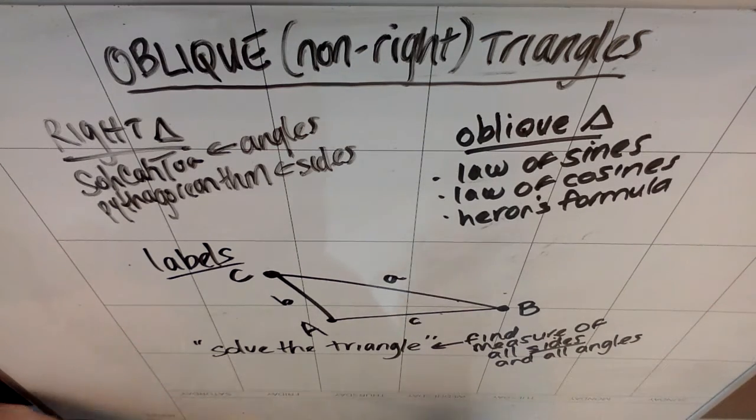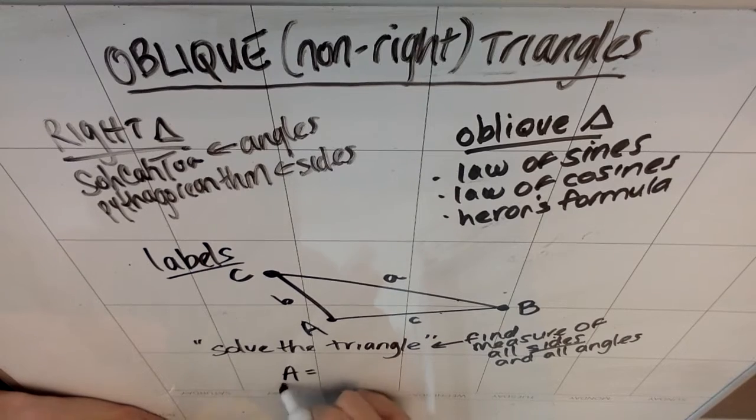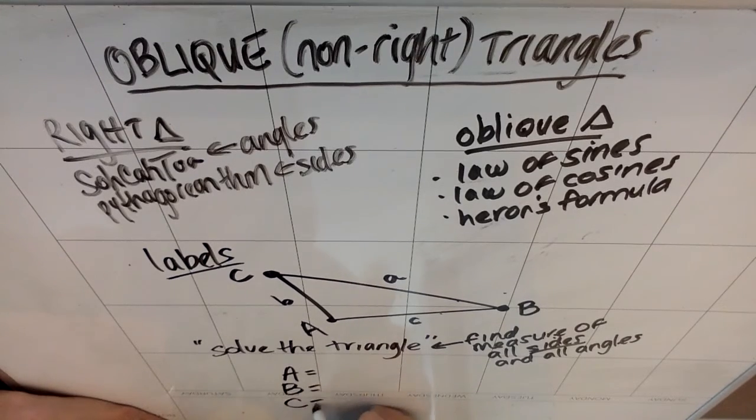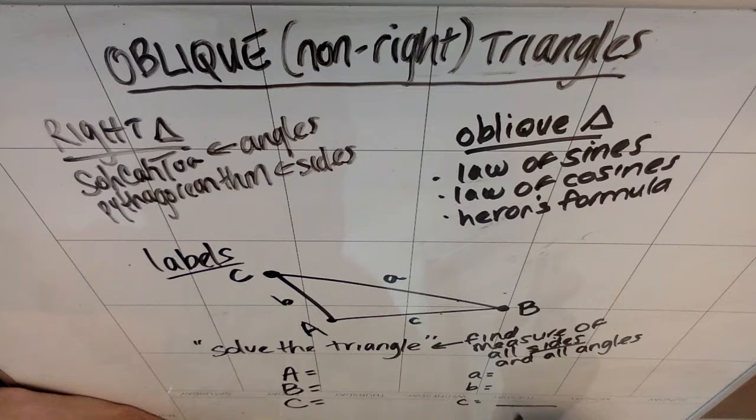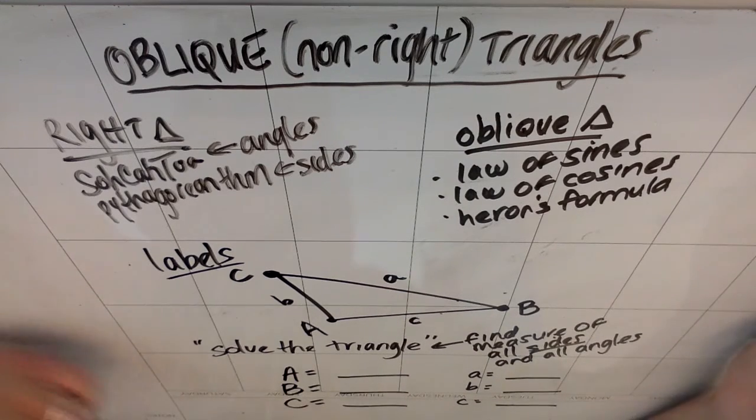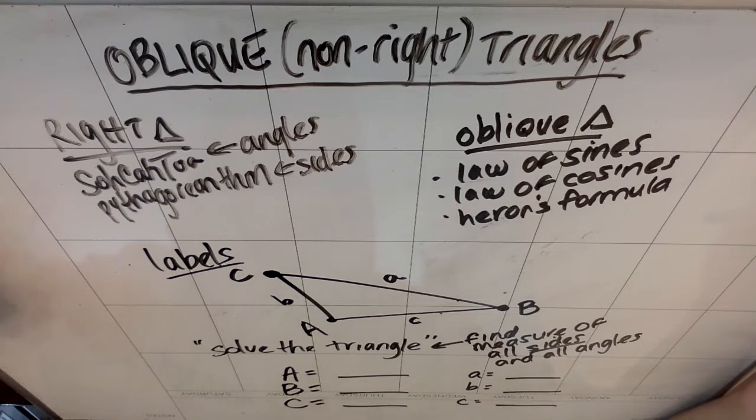So when I do this, I tend to write out my angles, capital A, capital B, capital C. And then I tend to write out my corresponding sides, lowercase a, lowercase b, lowercase c. And then I would fill in the things I know, and I would leave blank the things I don't, but that way I can't forget to find all six things.